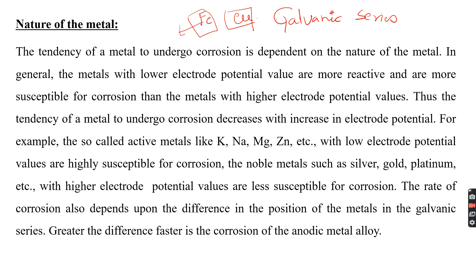In general, metals with a lower electrode potential value are more reactive and more susceptible for corrosion than metals with a higher electrode potential value. Thus, the tendency of a metal to undergo corrosion decreases with an increase in electrode potential. Active metals such as potassium, sodium, and magnesium are considered highly susceptible for corrosion.